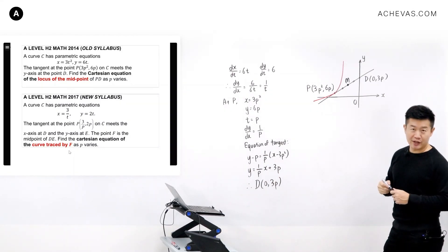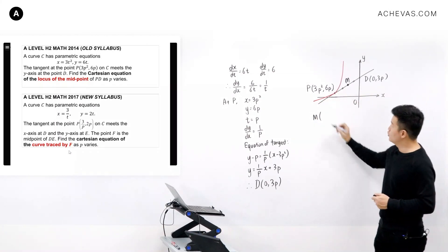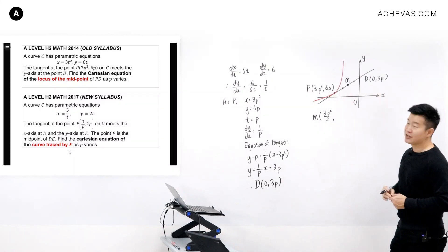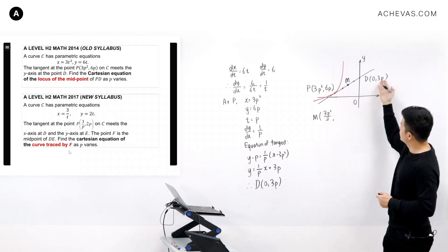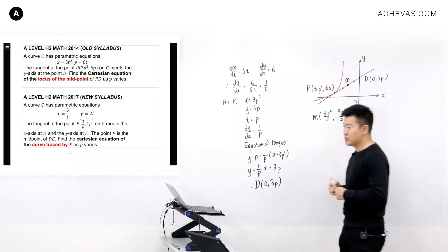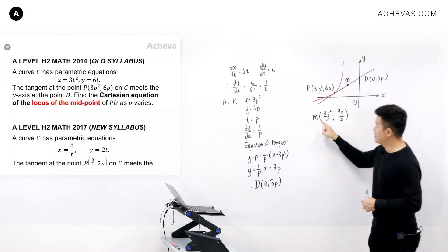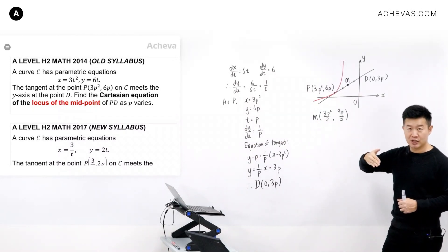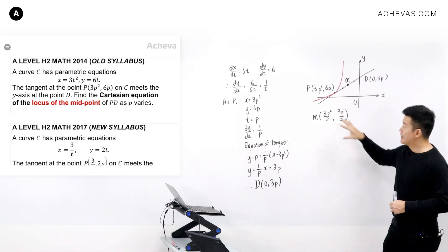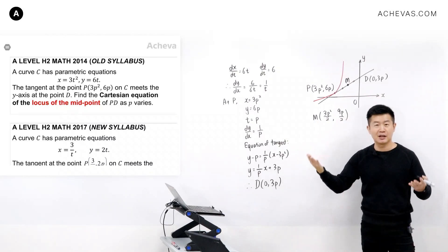So what is the midpoint? The coordinate of the midpoint is (x1 + x2)/2 and (y1 + y2)/2, giving us x = 3p²/2 and y = 9p/2. Since P is a variable and varies, the point M takes up different positions and traces out a path — that is what the question refers to as the locus of the midpoint.